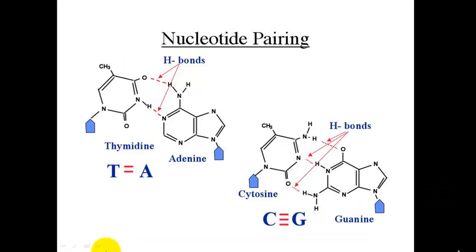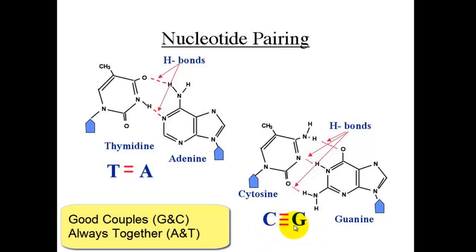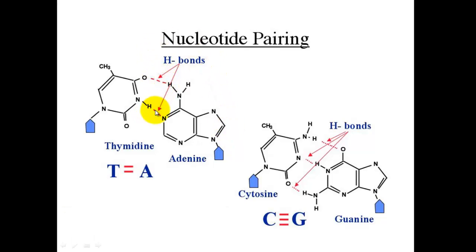We know that there's base pairing between the different nucleotides. The A's will only bind with T and the C's will always bind with G's. I remember that through 'good couples always together'—G with C and A with T. This is because of the hydrogen bonds between the molecules. They line up correctly for two hydrogen bonds between A and T, and three hydrogen bonds between C and G.